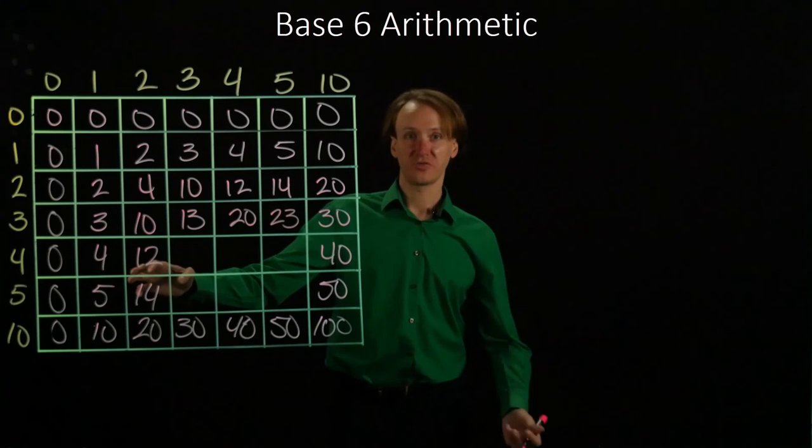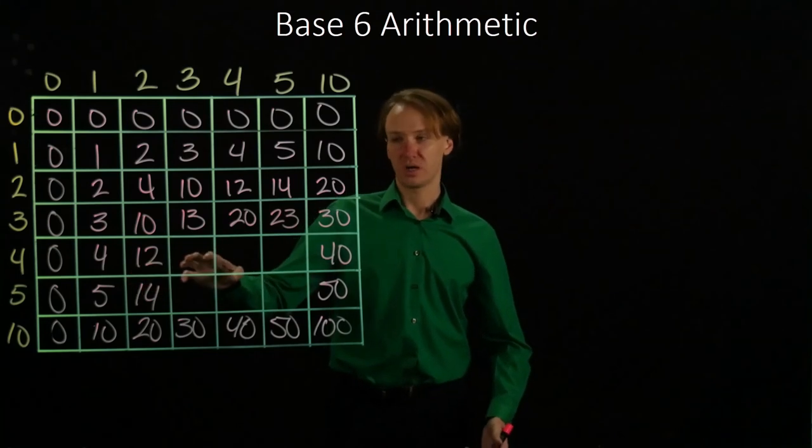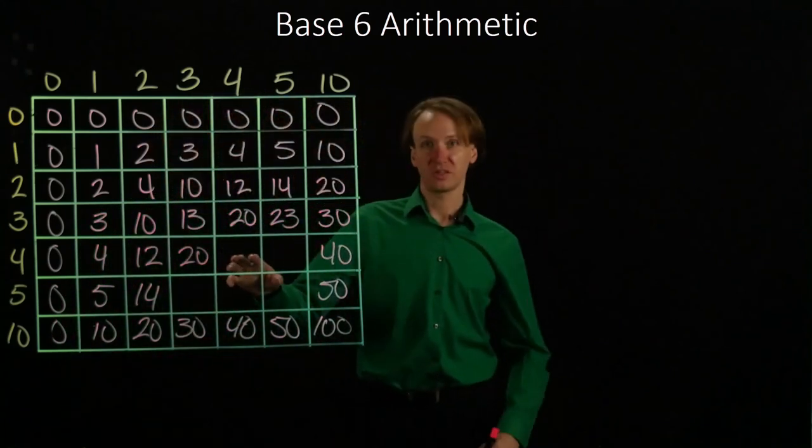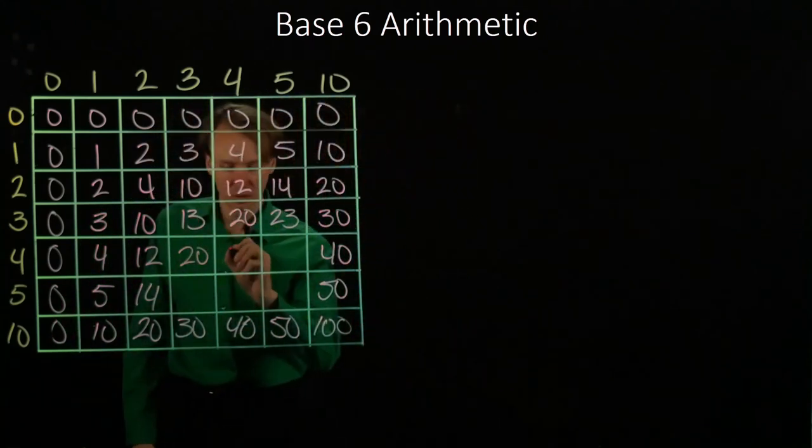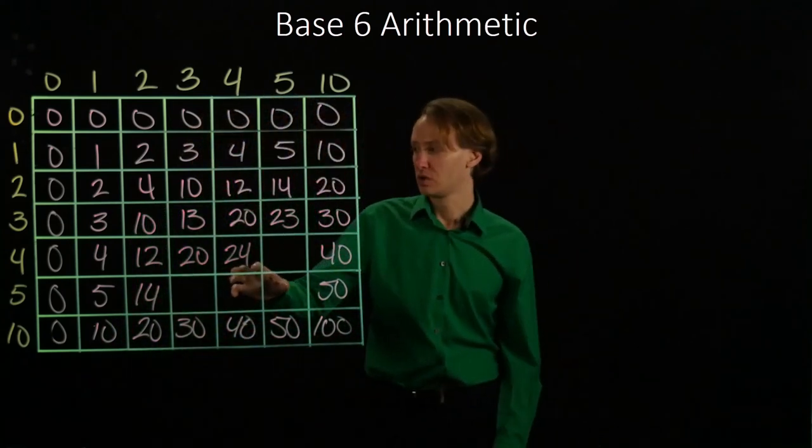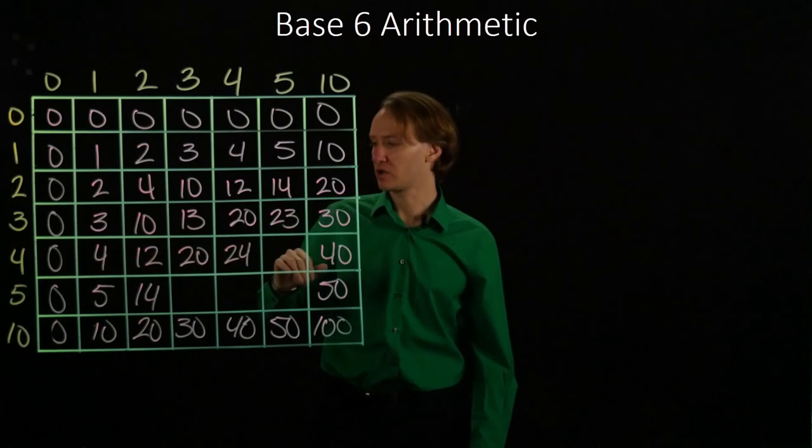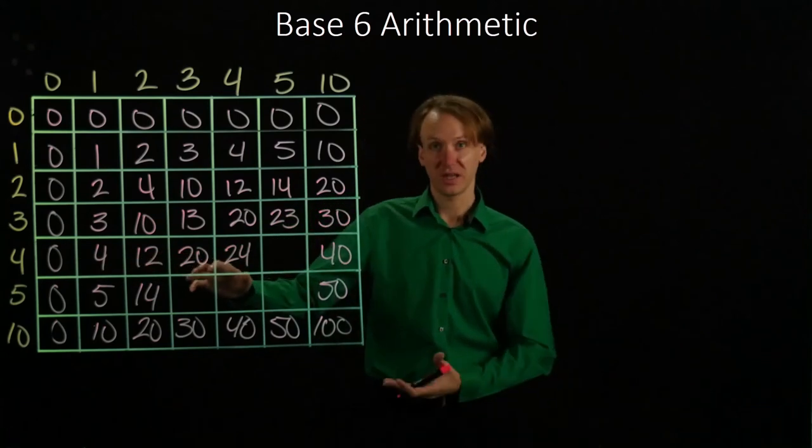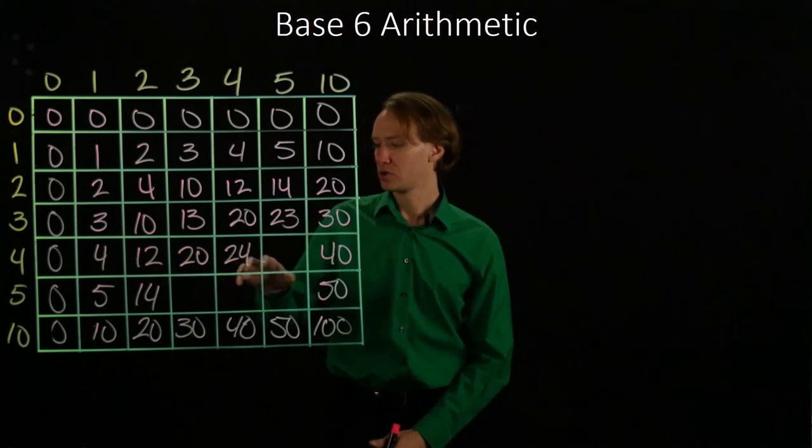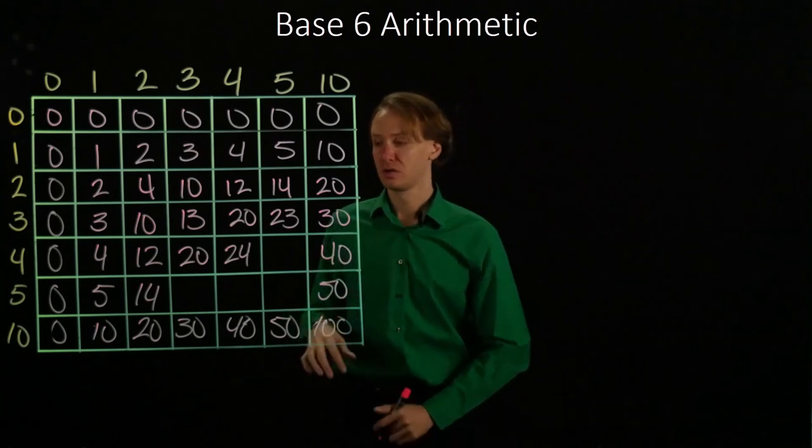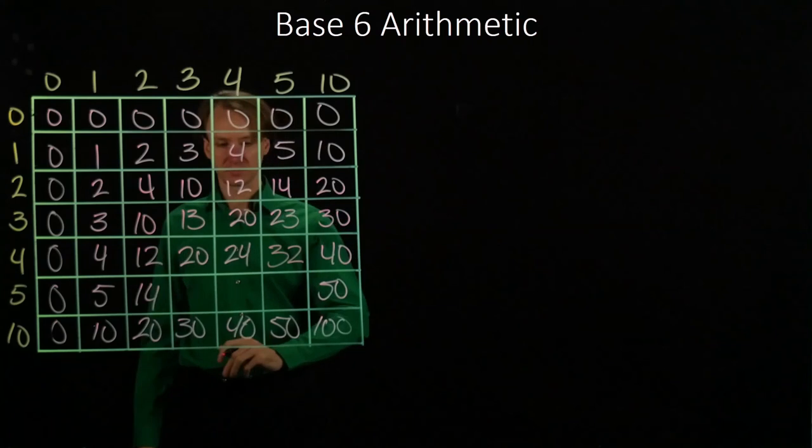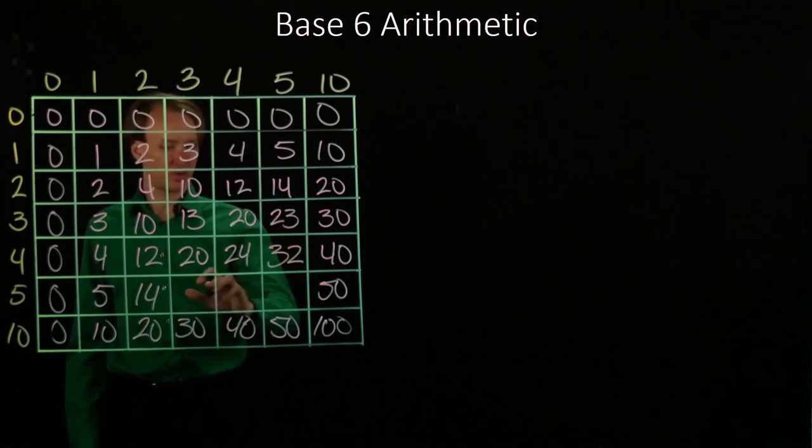Down here I have 12 plus 4, which will give me 20. Then 20 plus 4 is 24. 24 plus 4, you can kind of see that we're sort of repeating what we had over here, but with 20 added on. So 20 matches up here, 24, next will be 32, and then the 40. So I'll copy my 23 and my 32 over here.